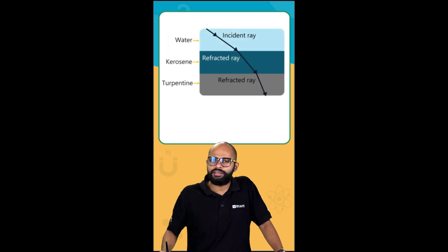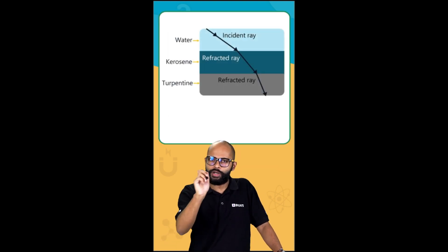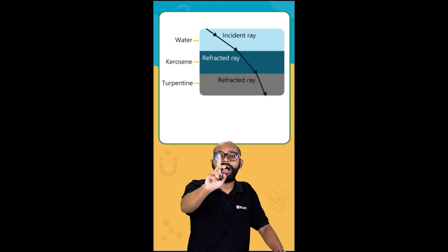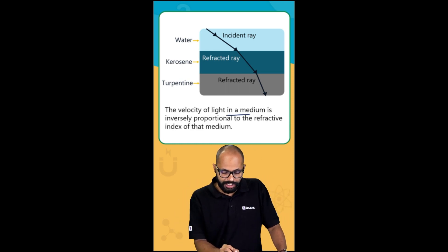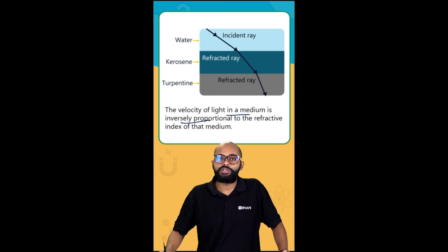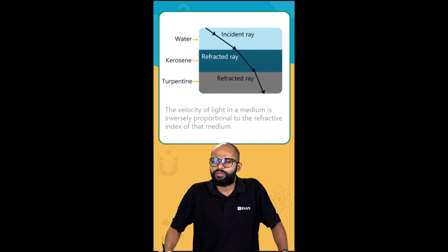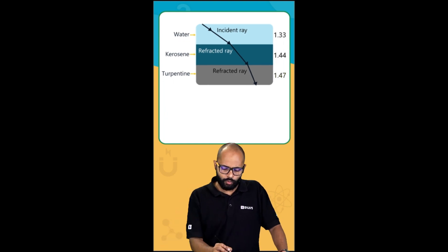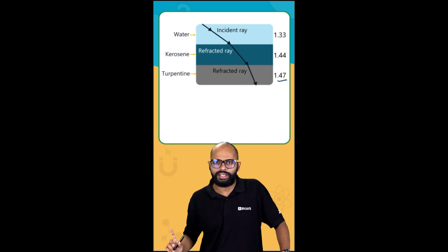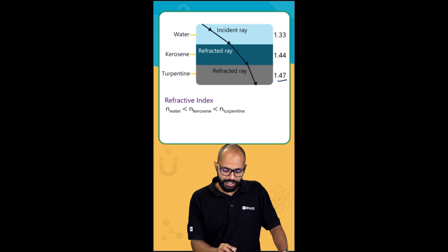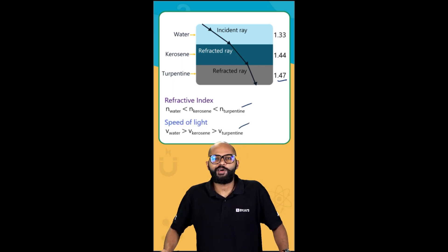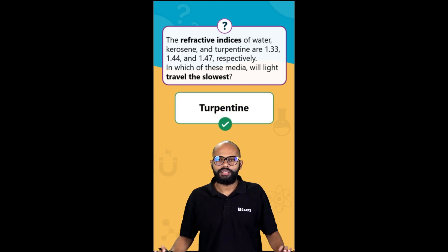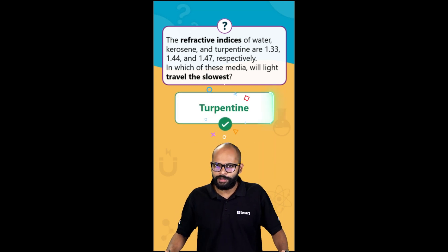Between water, kerosene, and turpentine, the question tells us that turpentine has the highest refractive index. We also know that the velocity of light in a medium is inversely proportional to the refractive index. So the maximum refractive index of 1.47 means the speed will be minimum in turpentine — and that is our answer. The answer is turpentine.